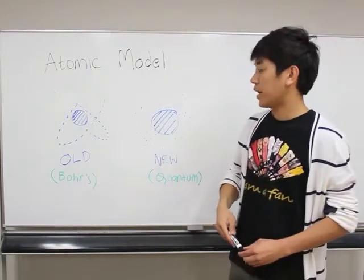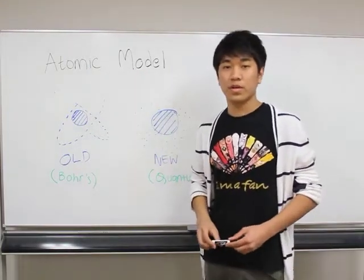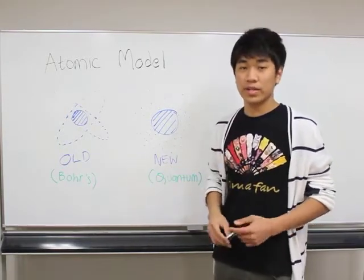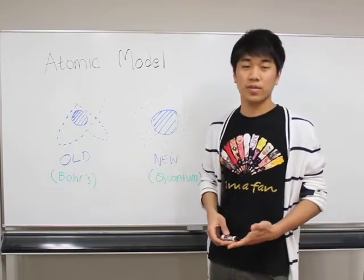But from Heisenberg uncertainty principle, now we know that it is not like that because we cannot really tell where the electron is and where it is going to be.